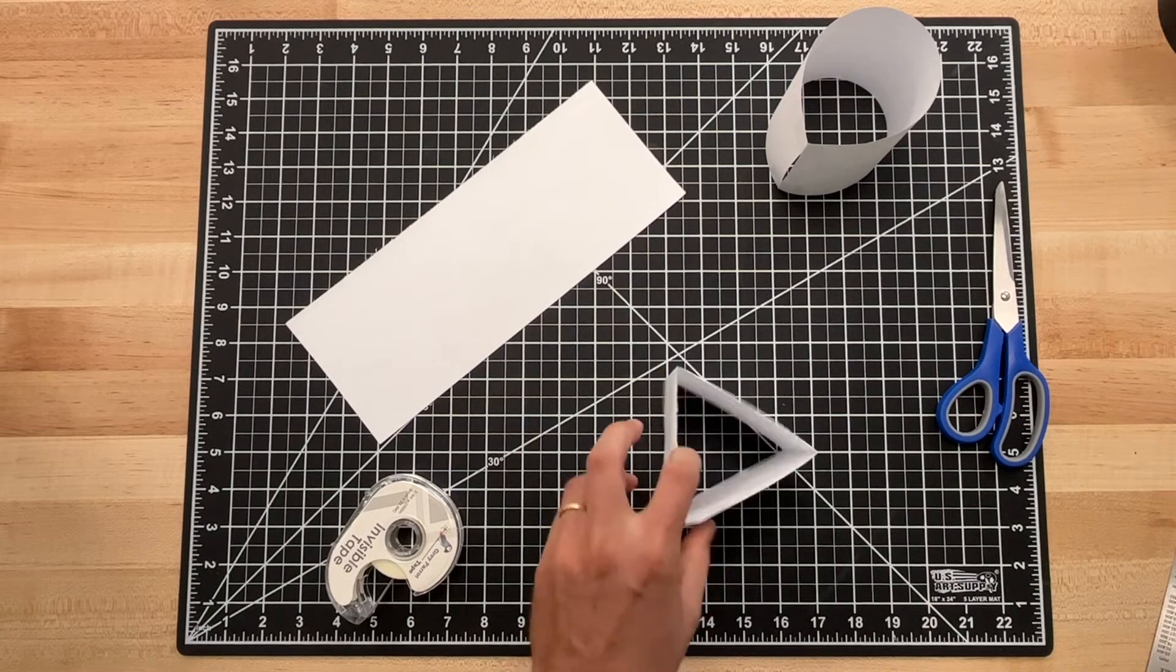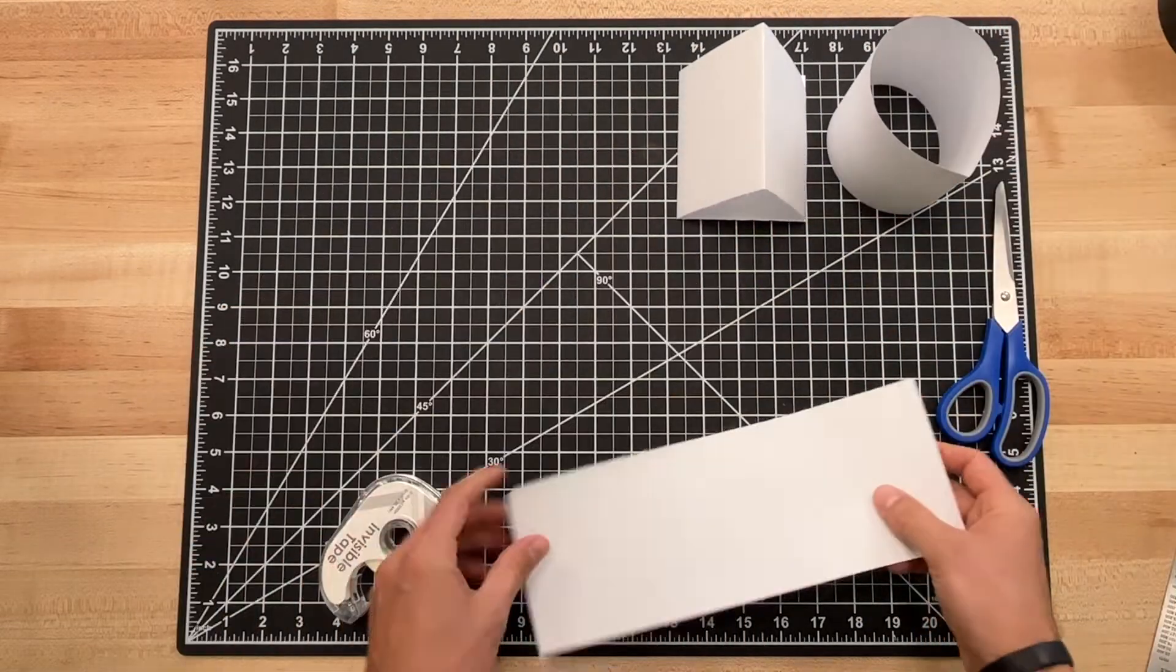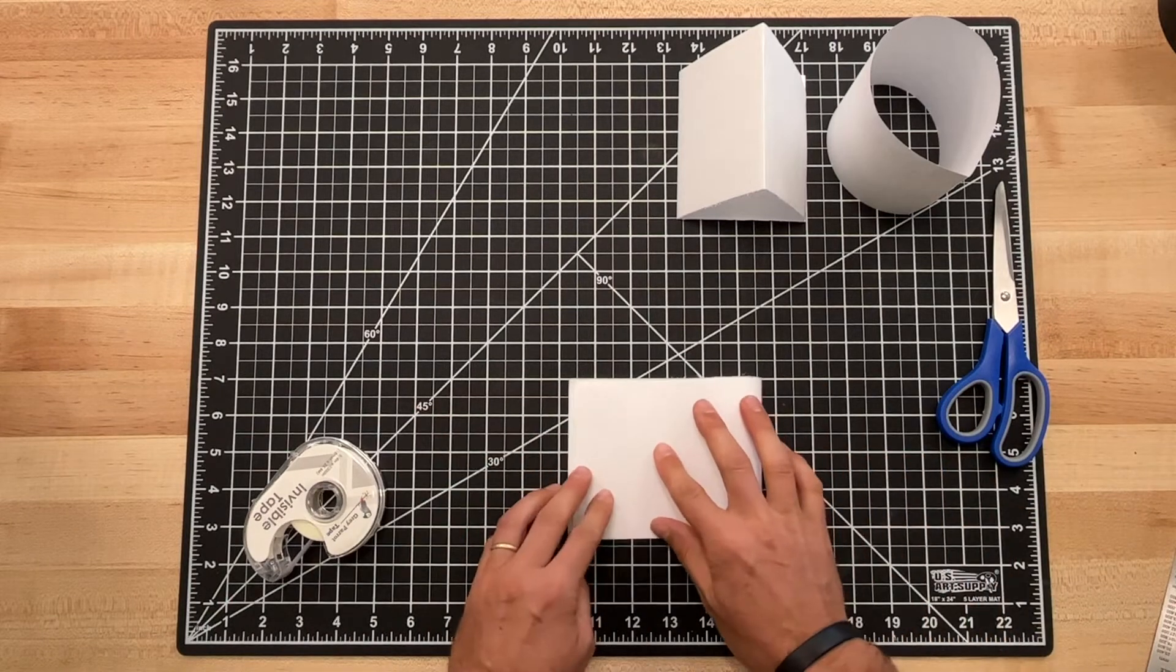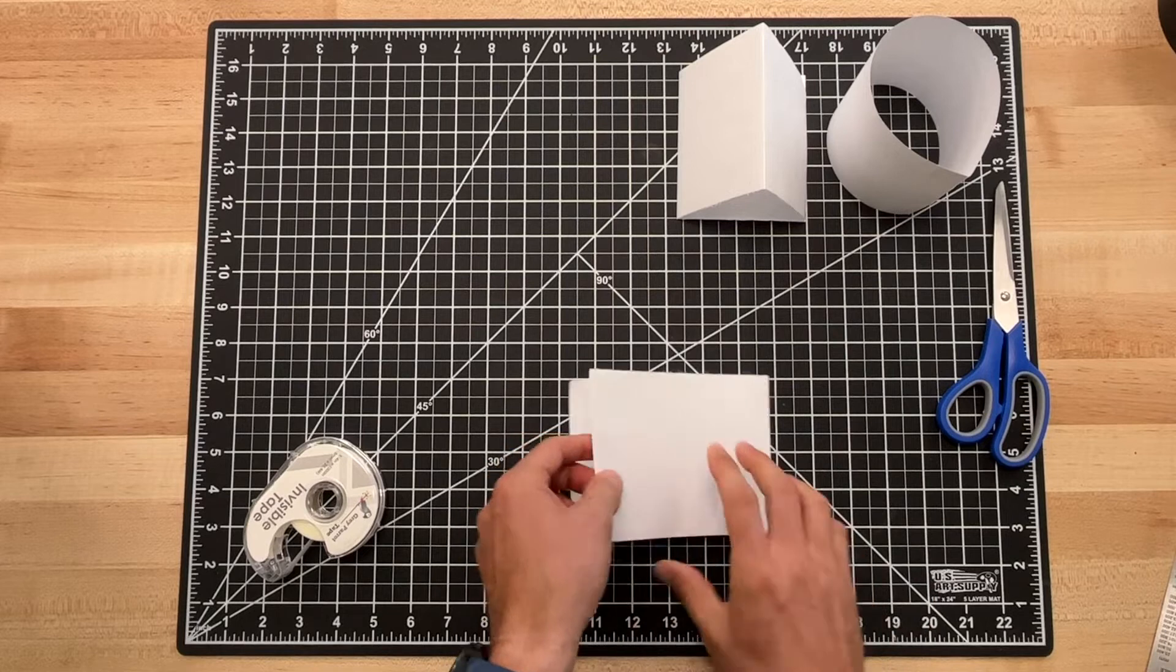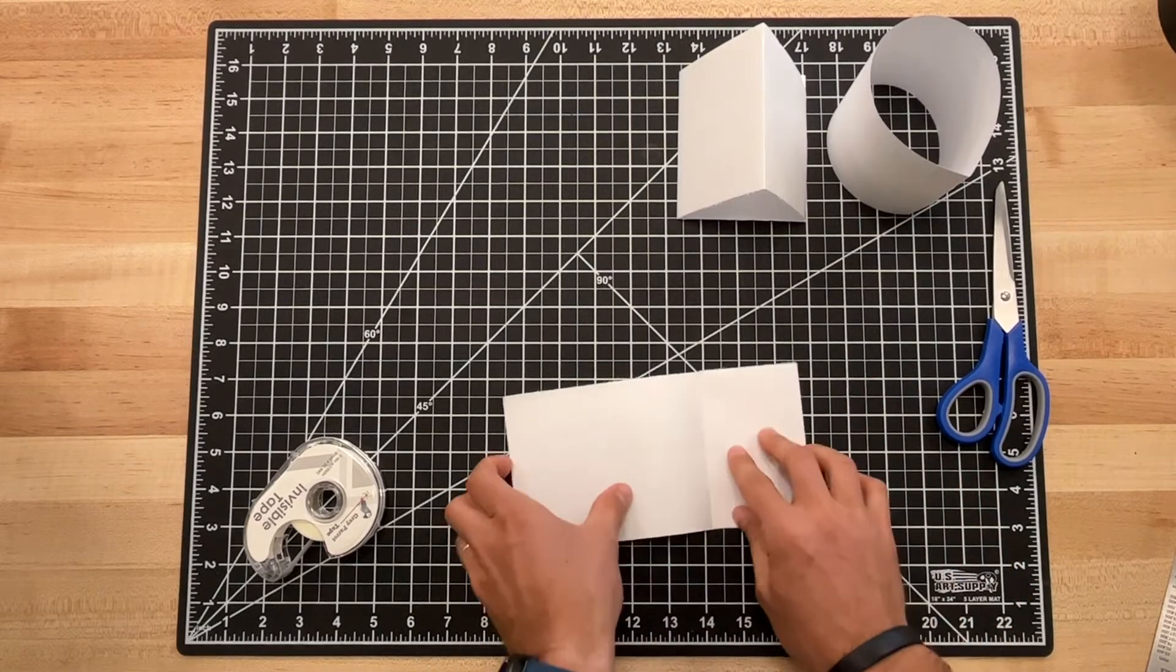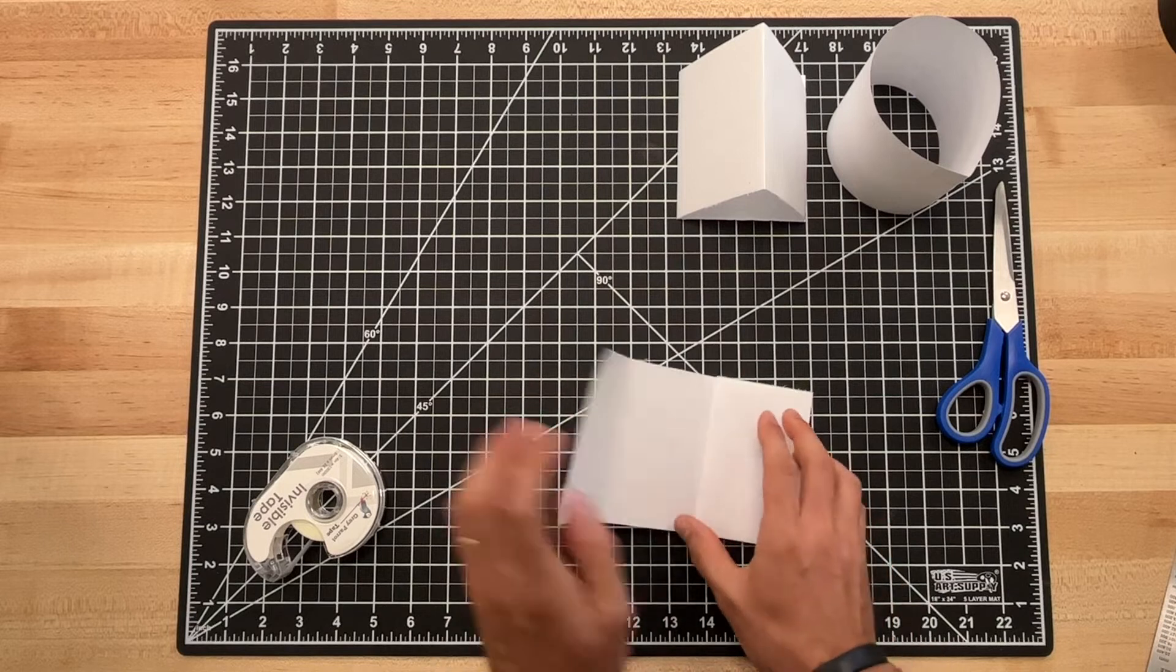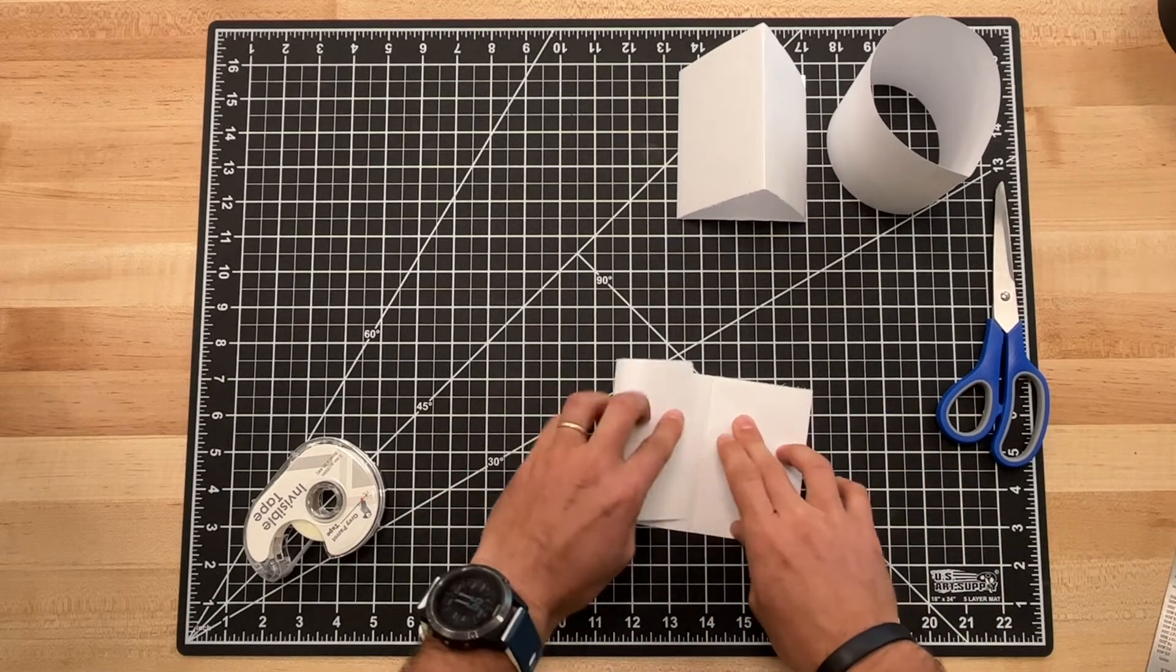Okay, and my third one I'm going to fold it in half so I have the center mark. This is going to be a rectangular prism, so actually a square, a three-dimensional square. Once I have the center line, I fold this part to the center and this part to the center.